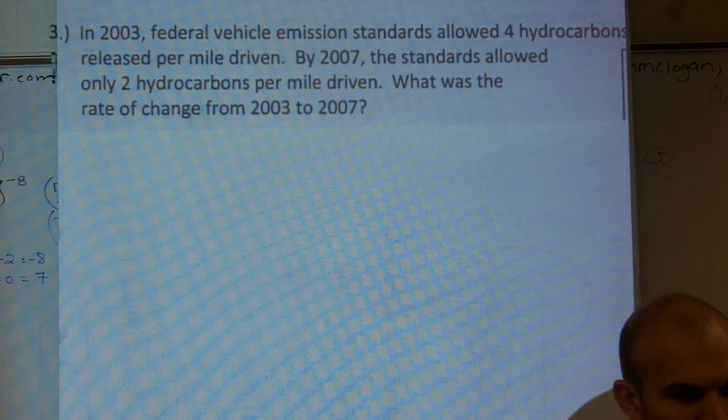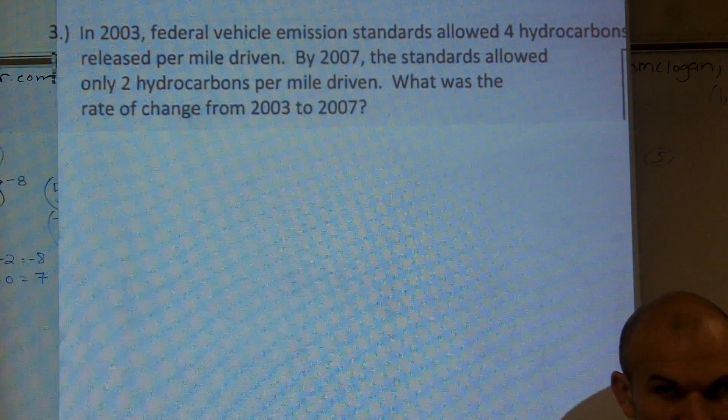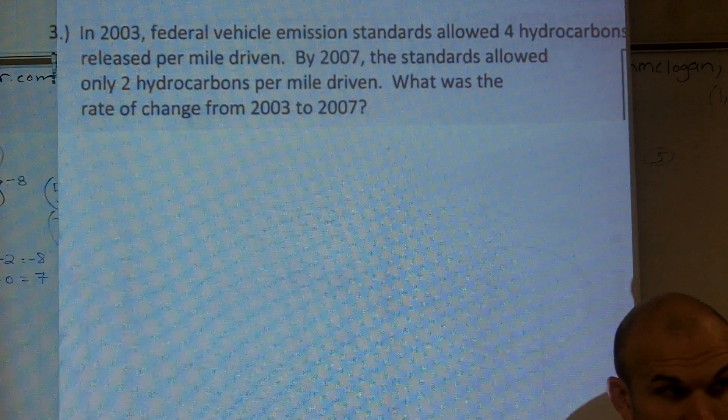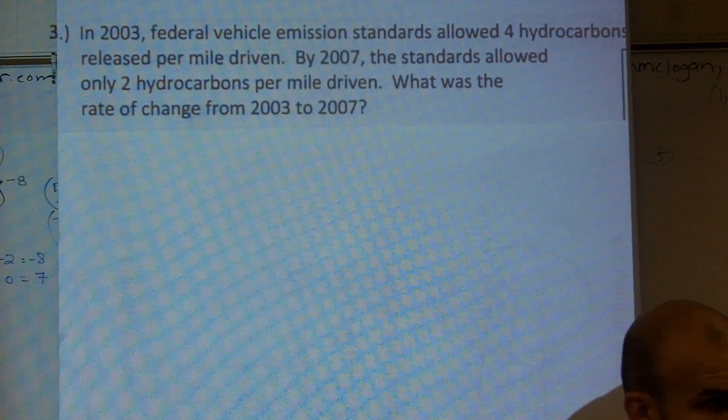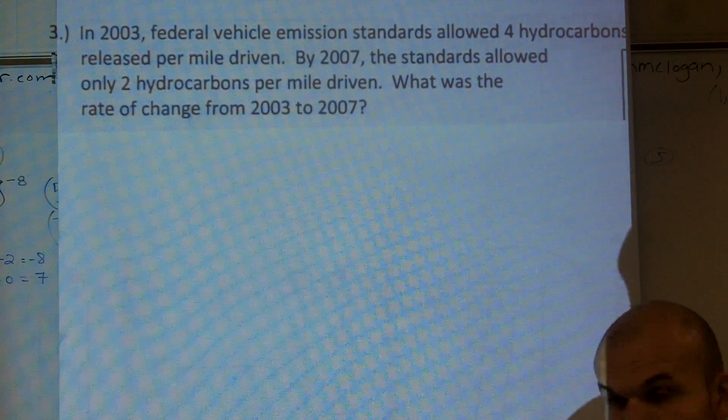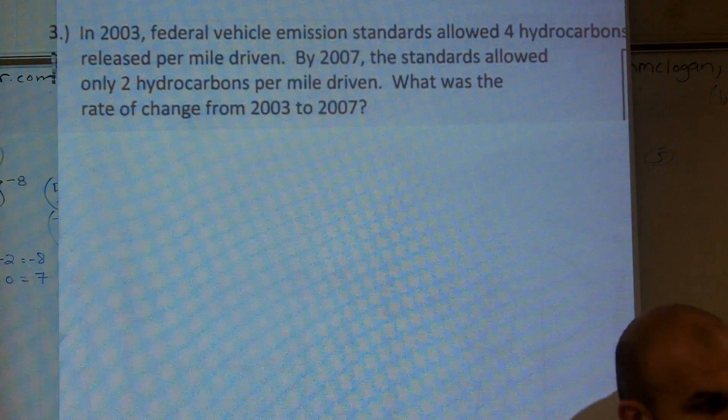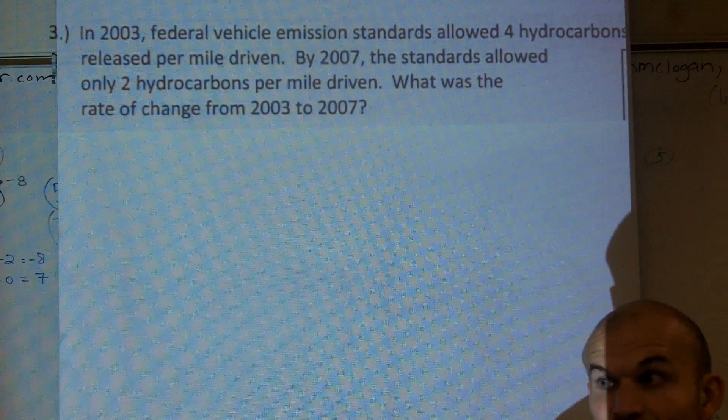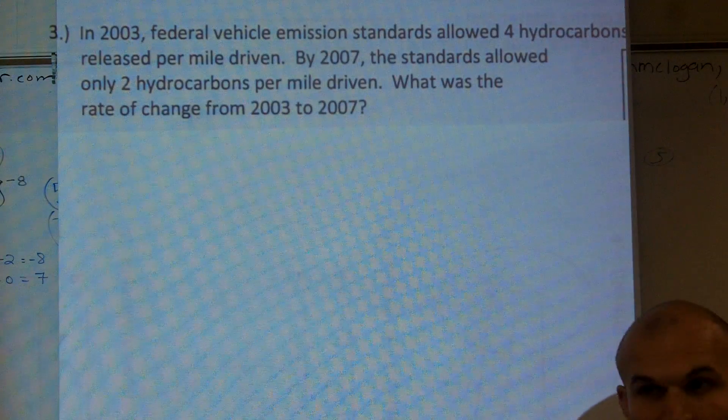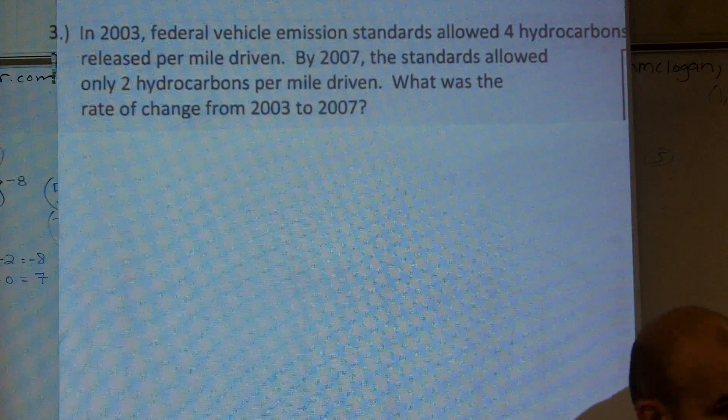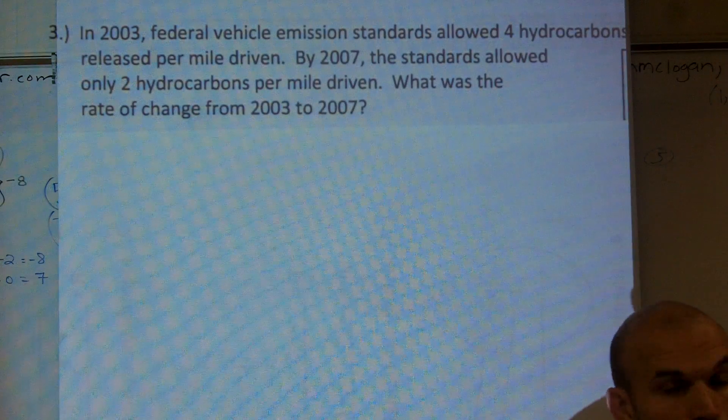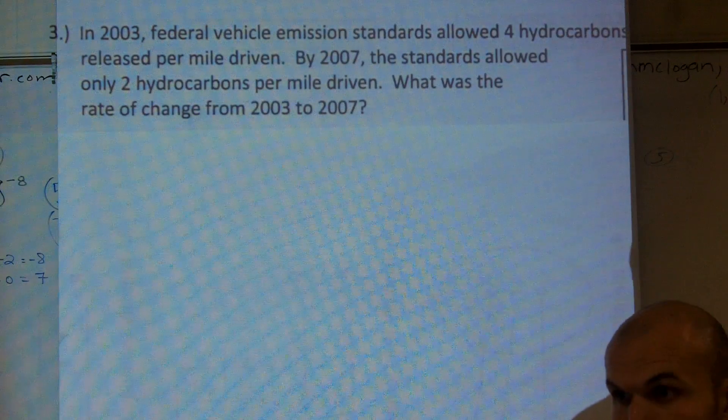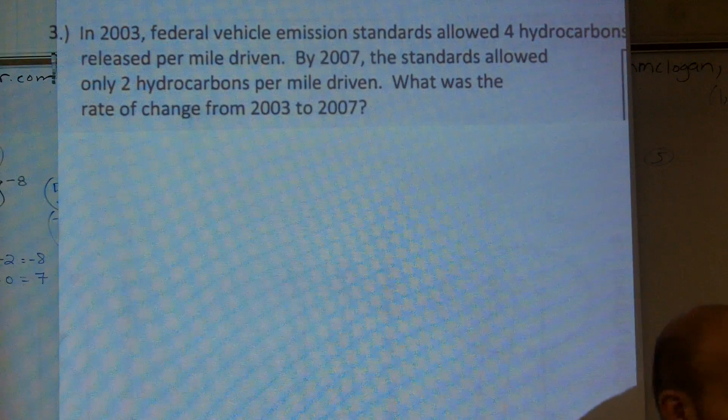I mean, you guys got to think about this. If it's 2003, you know the next year is going to be 2004, right? So 2004 does not depend on how many hydrocarbons were allowed. It's going to be 2004. So then the next year is going to be 2005. It has no bearing on how many hydrocarbons are allowed or not allowed, because the next year is always going to come after the previous year. So years do not depend on anybody.